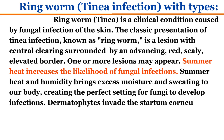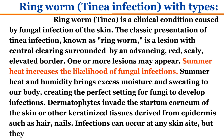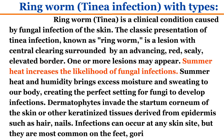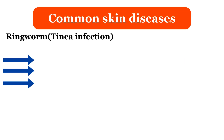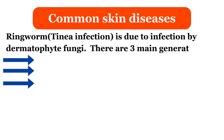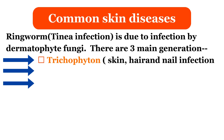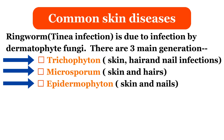Dermatophytes invade the stratum corneum of the skin or other keratinized tissues derived from the epidermis, such as hair and nails. Infections can occur at any skin site, but are most common on the feet, groin, scalp, and nails. Ringworm or tinea infection is due to infection by dermatophyte fungi. There are three main genera: Trichophyton, causing skin, hair and nail infections; Microsporum, causing skin and hair infections; and Epidermophyton, causing skin and nail infections.